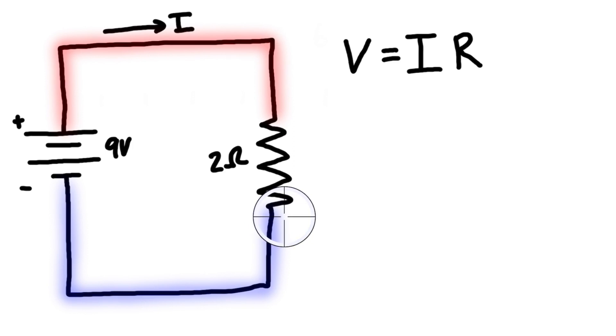We can rearrange our expression to solve for current: I equals V over R. So we have 9 volts divided by 2 ohms.